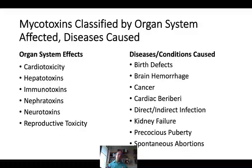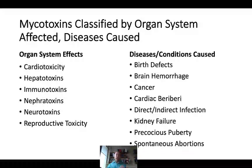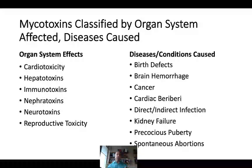There are different ways to classify mycotoxins, one of which is by the organ systems they affect. You can see they affect a wide range of organ systems—everything from heart to liver, immunity, kidneys, nerves, as well as having reproductive effects. On the side of diseases actually caused, we can see anything from reproductive-related birth defects, brain hemorrhages, cancer, effects on cardiac muscle, and immune suppression to the point where opportunistic infections take over. This was certainly the case with the wheat that overwintered in the fields in Russia, resulting in severe immune suppression, kidney failure, precocious puberty, and spontaneous abortion—a very wide range of conditions affected by different types of mycotoxins.